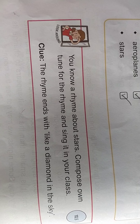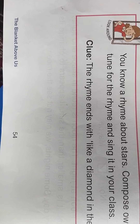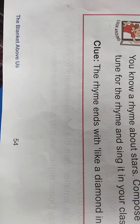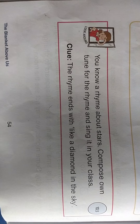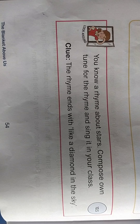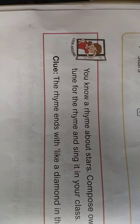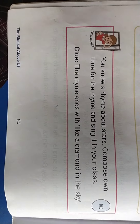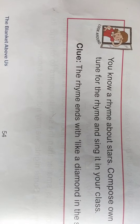Twinkle twinkle little star, up above the world so high, like a diamond in the sky. This is the rhyme - it ends with 'like a diamond in the sky.' So today's class is complete. Next I will explain the remaining class. Goodbye children.